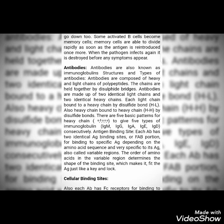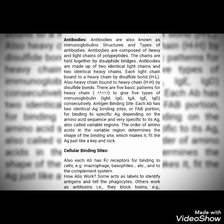Antibodies are also known as immunoglobulins. Structure and types: antibodies are composed of heavy and light chains of polypeptides held together by disulfide bridges — two identical light chains and two identical heavy chains. Each light chain is bound to a heavy chain by a disulfide bond (H-L), and heavy chain to heavy chain by a disulfide bond. There are five basic patterns for heavy chains — alpha, beta, gamma, etc. — giving five types of immunoglobulin: IgM, IgG, IgA, IgE, and IgD.